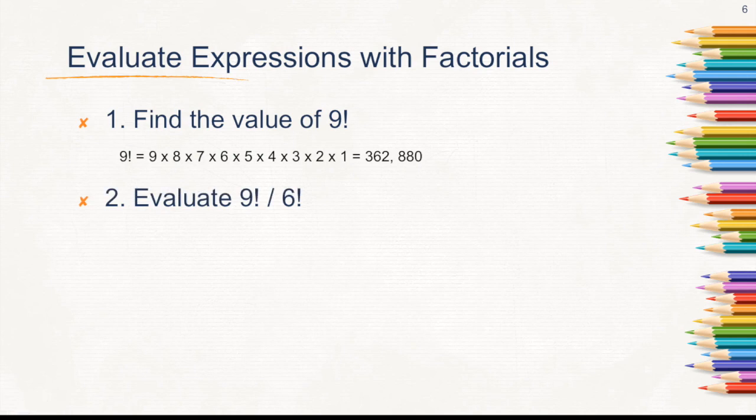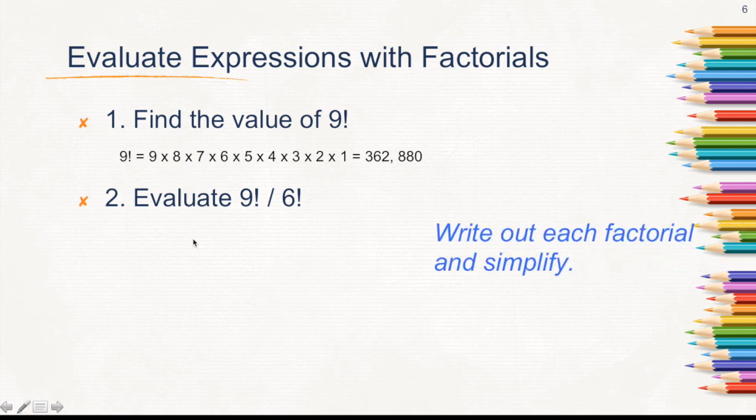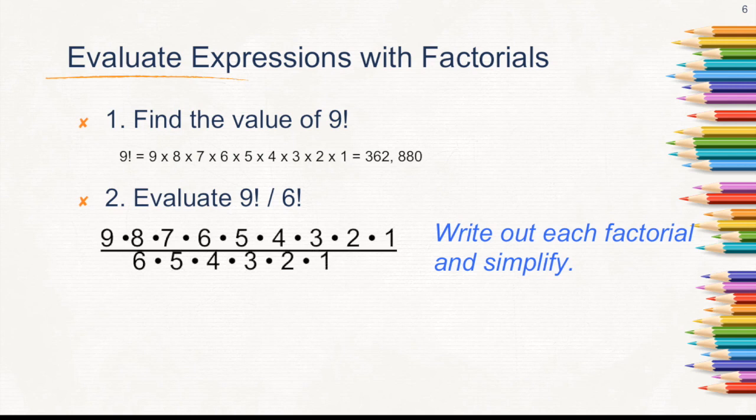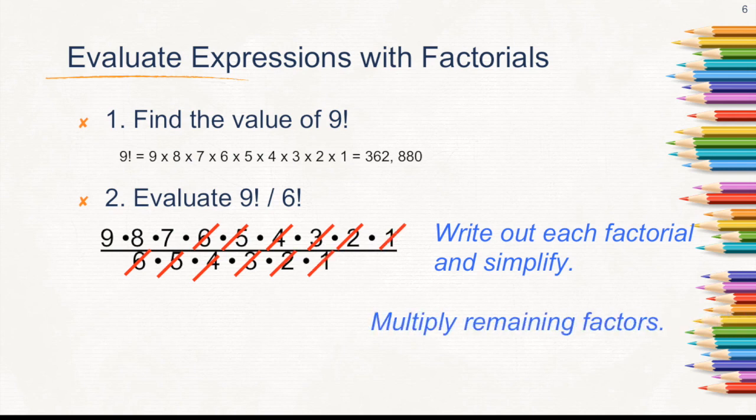Second example: evaluate 9 factorial divided by 6 factorial. That means we need to write out each factorial and then simplify. 9 factorial is 9 times 8 times 7 up to 1. 6 factorial is 6 times 5 times 4 up to 1. We need to simplify. We can cancel out 6, 5, 4, 3, 2, and 1. Multiply the remaining factors: 9 times 8 times 7, which is equal to 504.